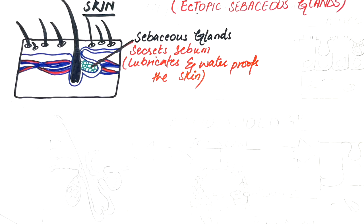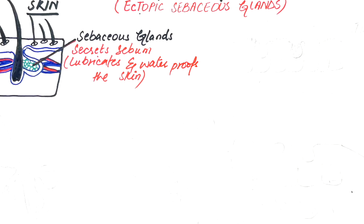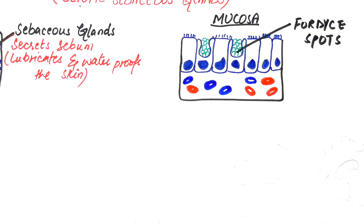Sebaceous glands secrete an oily substance called sebum. Sebum lubricates and waterproofs the skin and hairs. Ectopic sebaceous glands are found in abnormal sites where they are not associated with hair follicles. These abnormal sites are most often the mucous membranes, like the mucous membrane of our mouth, where they may form small yellow papules called Fordyce spots.